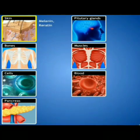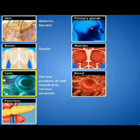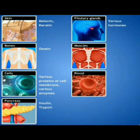Proteins and the amino acids obtained are used for: skin (melanin, keratin), bone (ossein), cell membranes, various enzymes, pancreatic insulin and trypsin, pituitary gland hormones, muscle proteins (actin and myosin), and blood proteins like hemoglobin and antibodies.